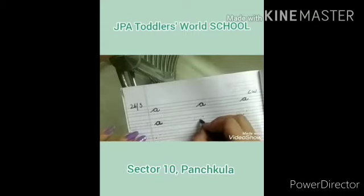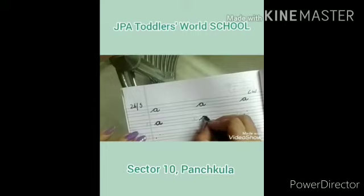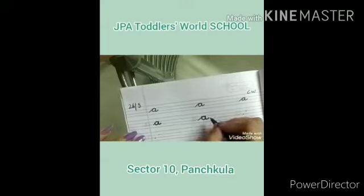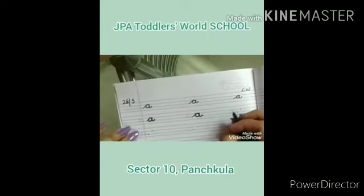Again. Join the dots. Make a cursive tail. Come down. Make a C. Go up. Come down. Touch the blue line. Make a curve. A.